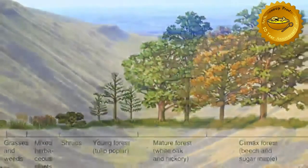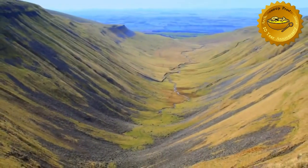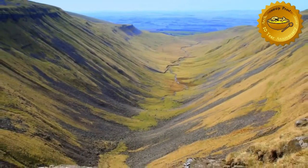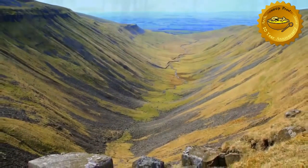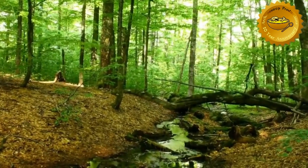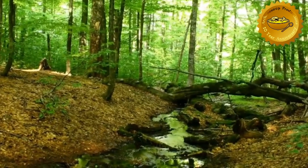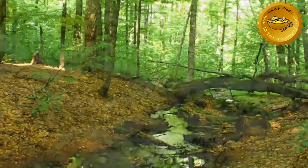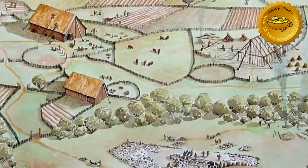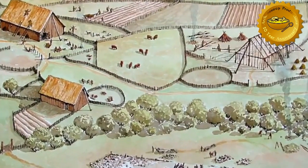For example, we can observe a post-glacial landscape stripped almost clean and bare of plants as it develops into a fully matured beech wood forest. Or perhaps it will take a tangent and people will move into the area, chop down the trees, and start farming.